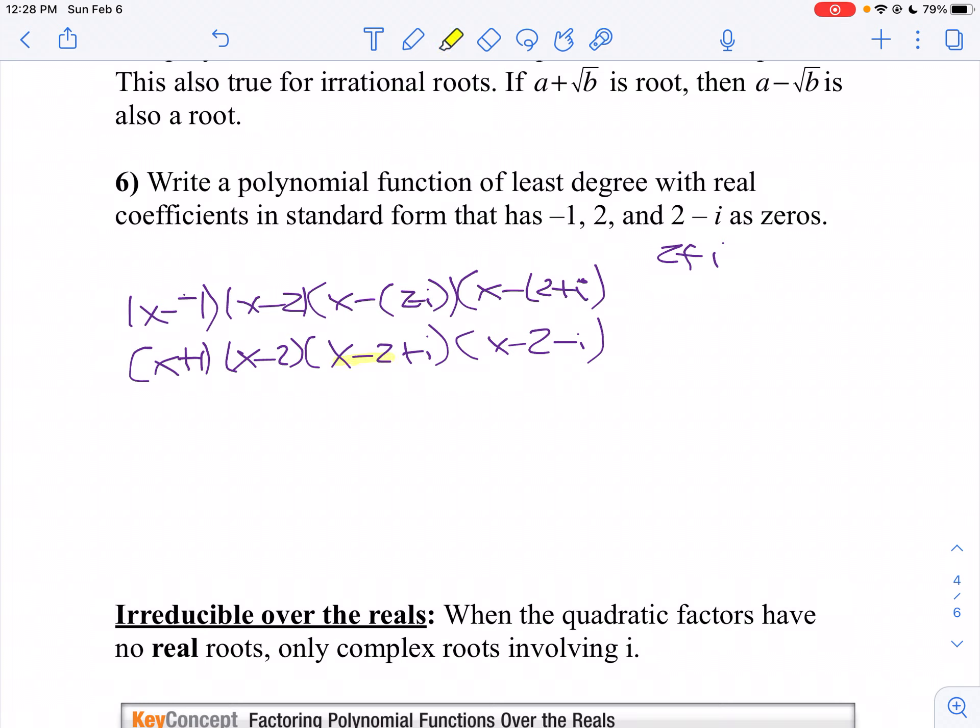But notice what happens here. If I take (x minus two plus i) times (x minus two minus i), that's the same thing as taking (x plus y) times (x minus y). So I'm going to get x squared minus y squared, which is (x minus two) squared minus i squared.